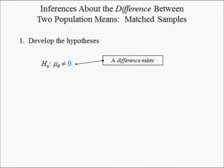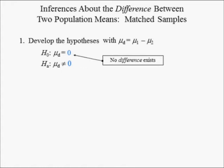Recall that we wanted to test whether the data indicate a difference in mean delivery times for the two services. This is the alternative hypothesis, which means the test is two-tailed, because a difference in the mean is the same thing as one mean being greater than or less than the other. Mu d is defined to be the difference in the two population means. If there is no difference in the two means, then mu d would equal the hypothesized difference of 0, so the null hypothesis is mu d equal to 0.